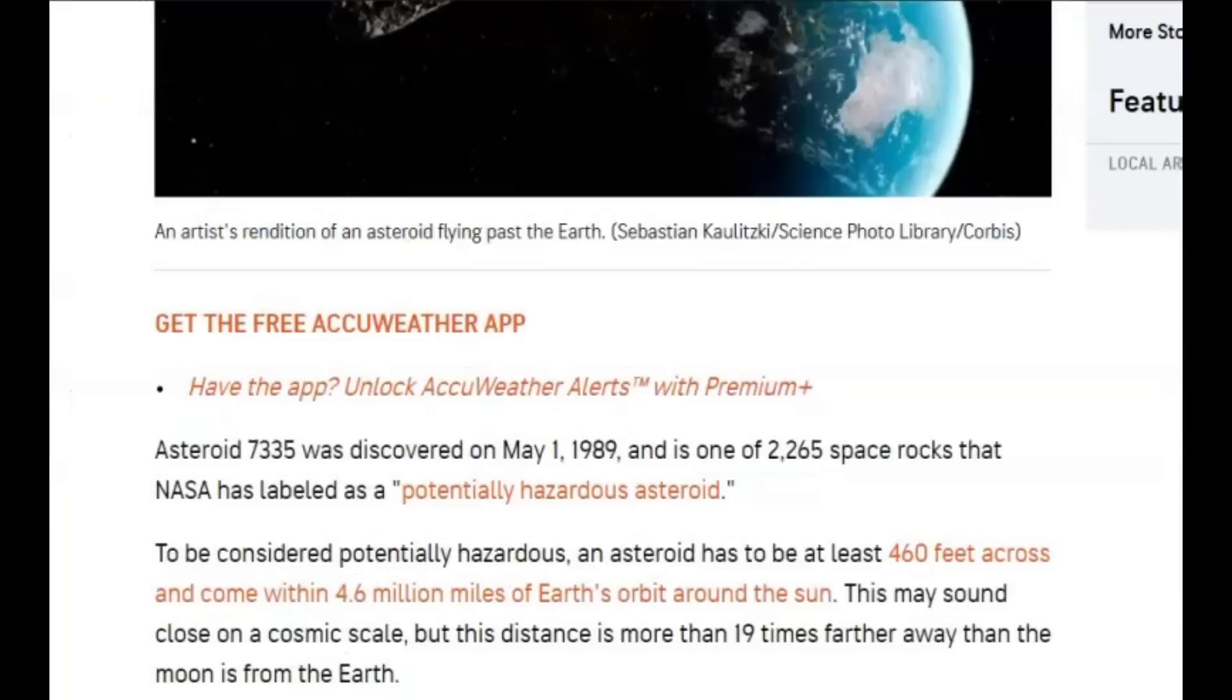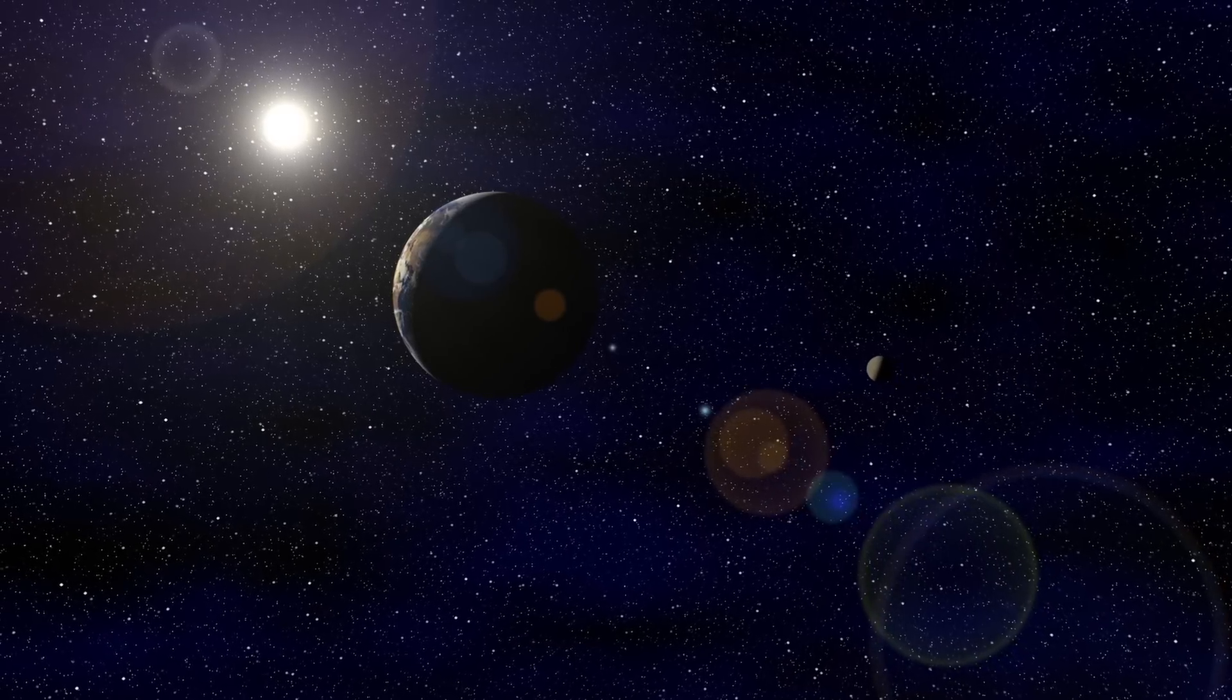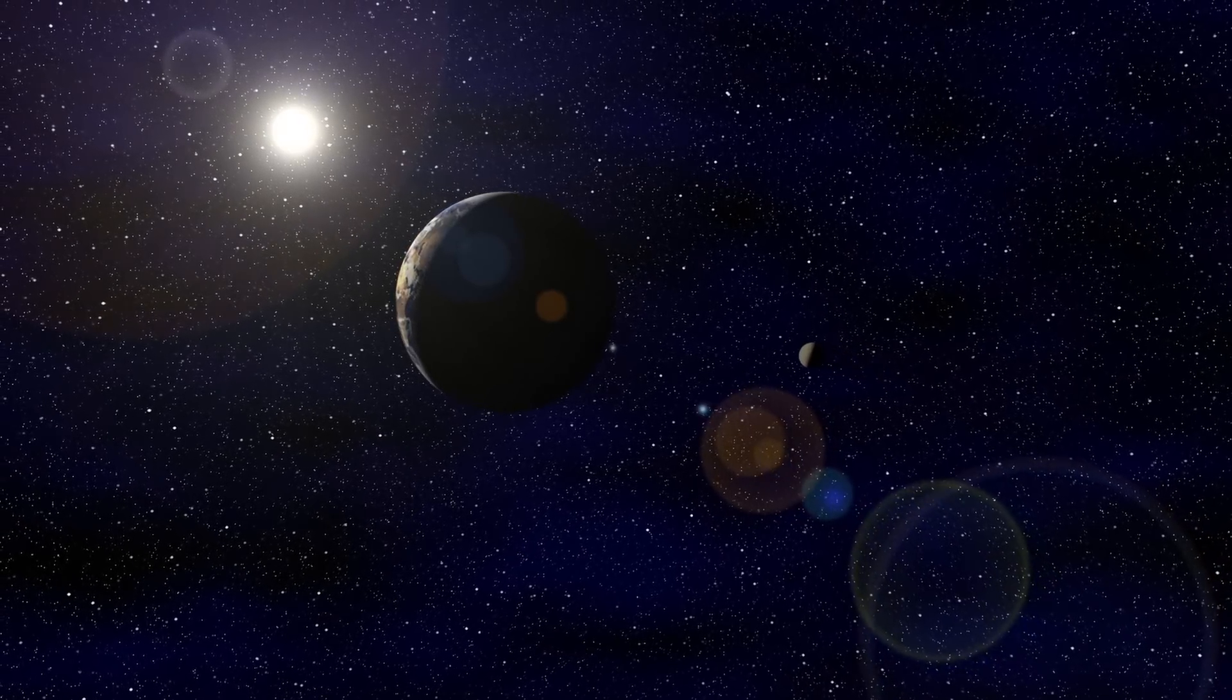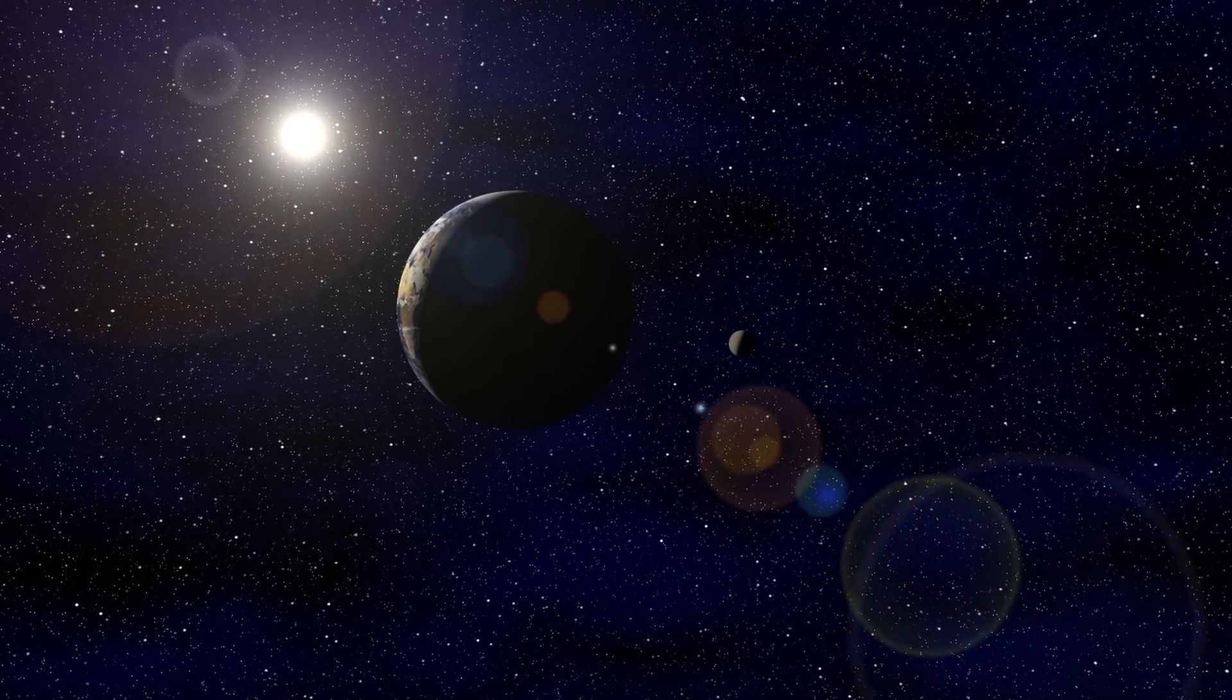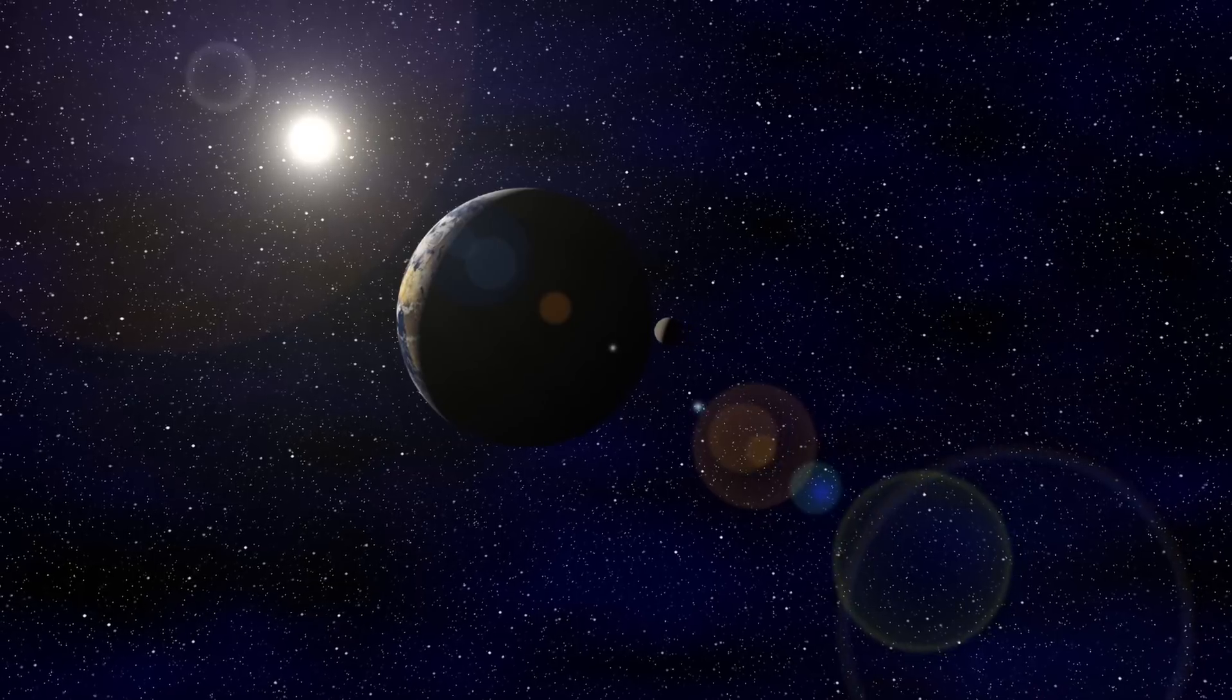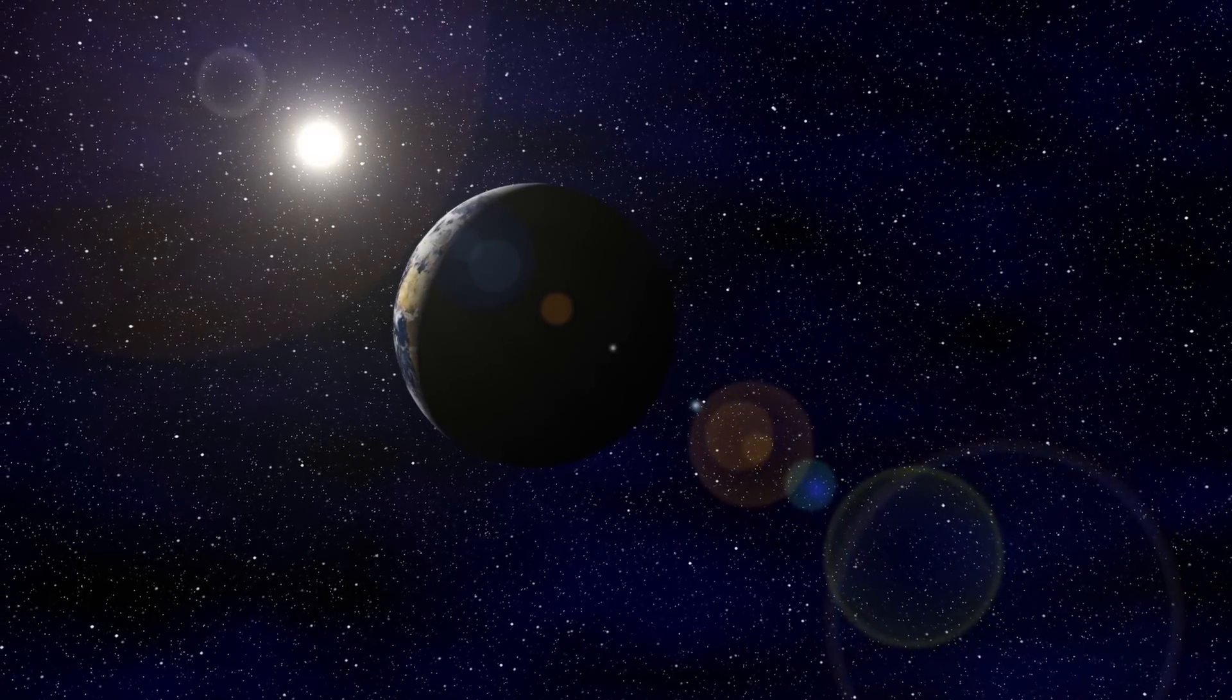Asteroid 7335 was discovered in May of 1989 and is one of the 2,265 space rocks that NASA has labeled as a potentially hazardous asteroid. Now, supposedly Friday, it will come within 2.5 million miles of the Earth.